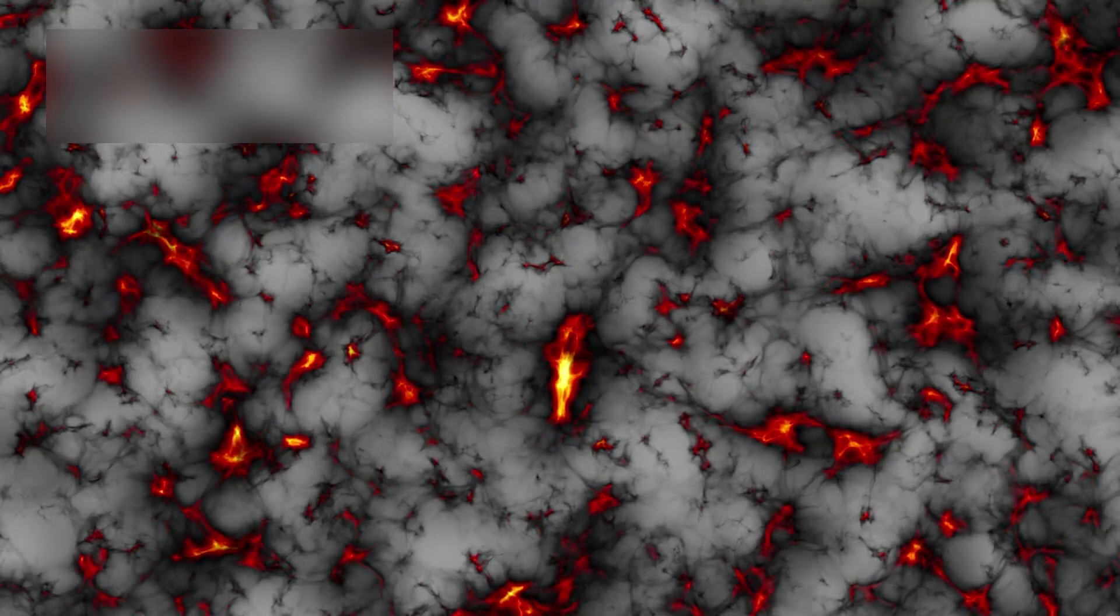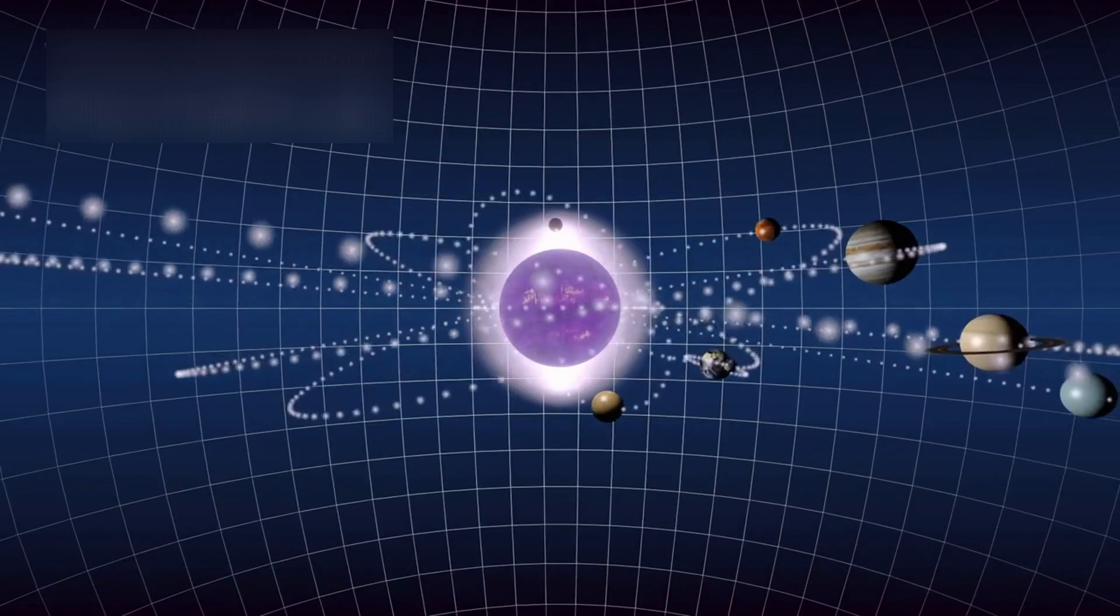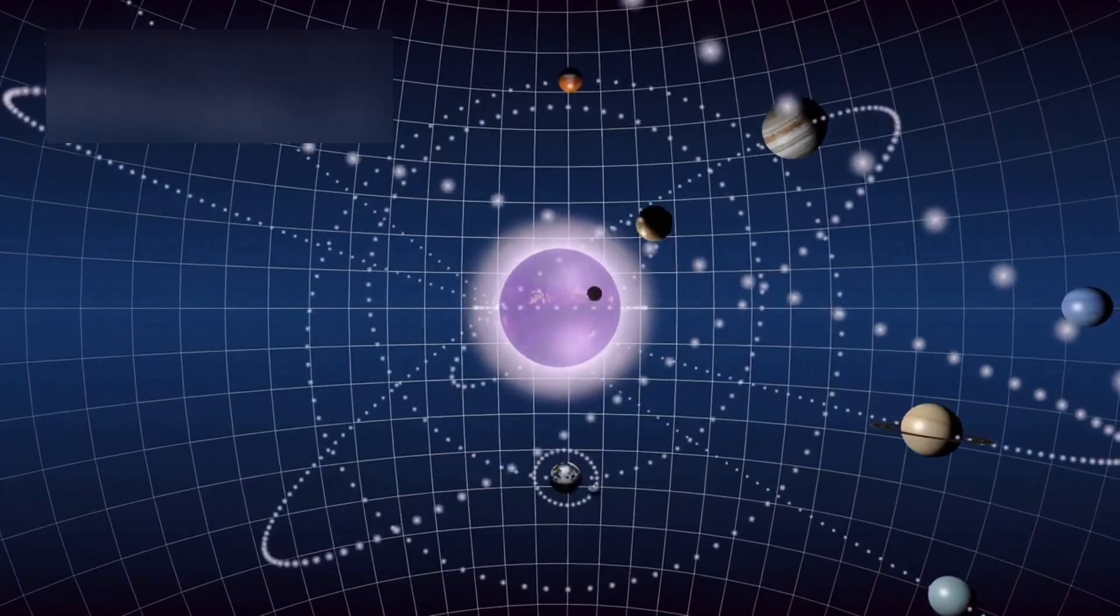Astronomers now estimate there are over 2 trillion galaxies within the observable universe, 2 trillion islands of light, each with its own stars, planets, and possibilities.